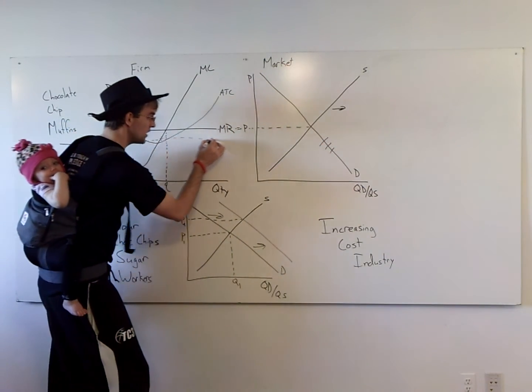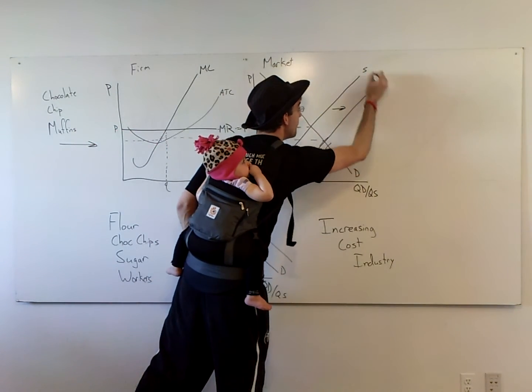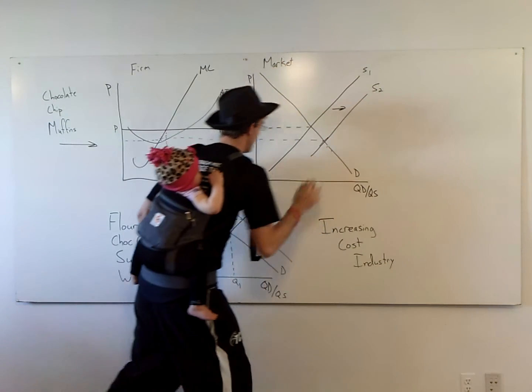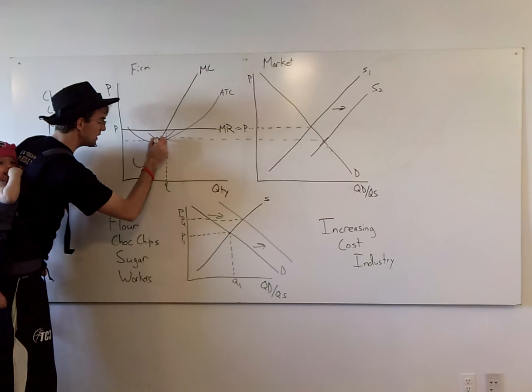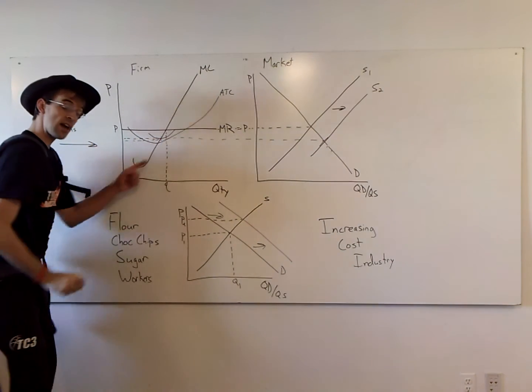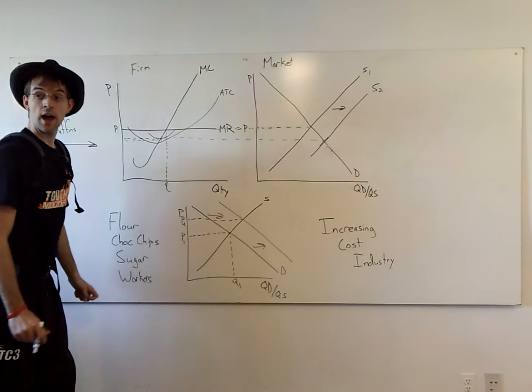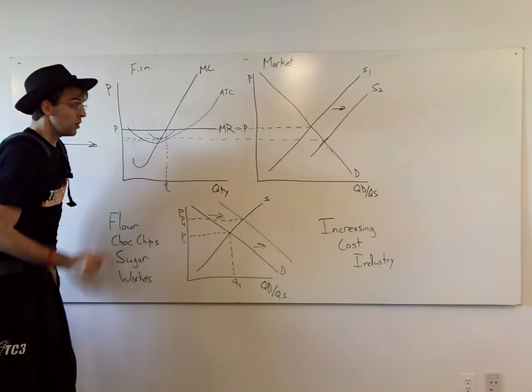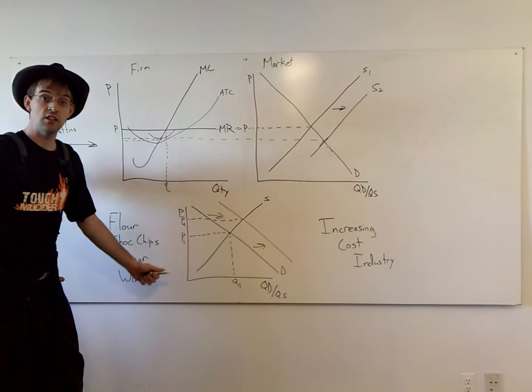So simultaneously, the ATC curve starts shifting upward while your supply curve moves to the right. And they're going to end up meeting someplace in the middle here. So you get your new ATC curve like this. So it's not the original minimum of ATC. It's a new spot, a little bit higher.